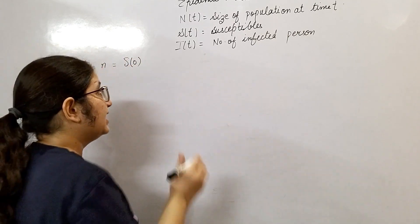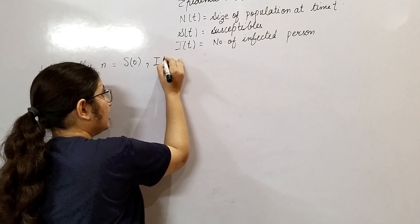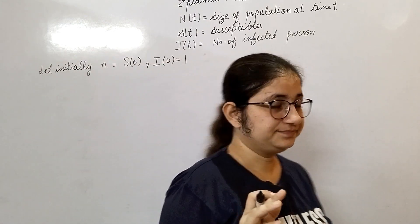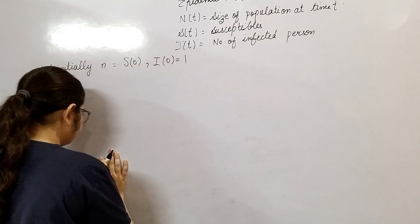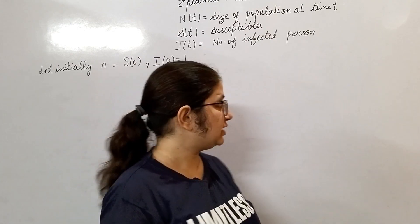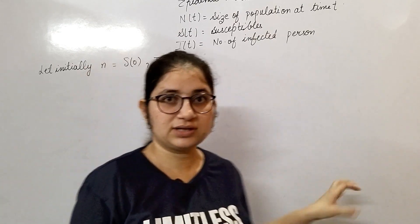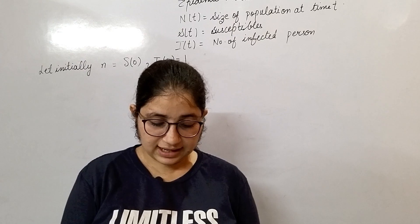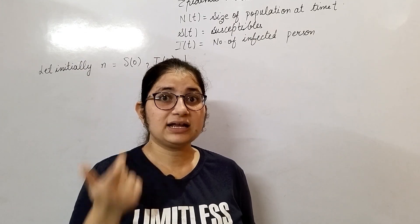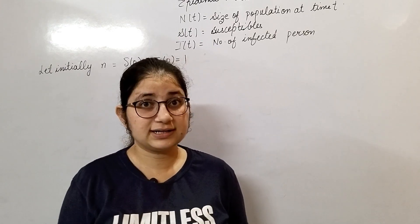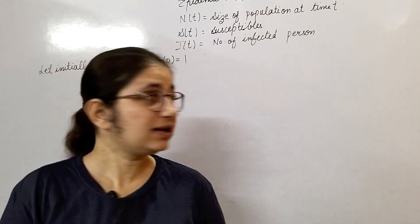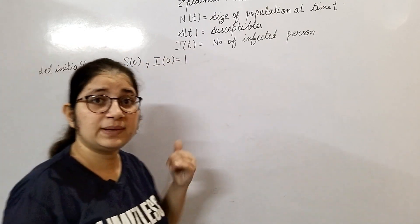Initially we consider that n people are susceptible and only one person is infected. Now there is a key logic to understand while putting the signs. Susceptible means they can get infection.